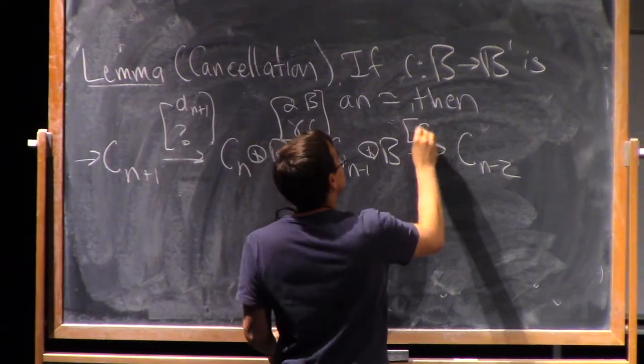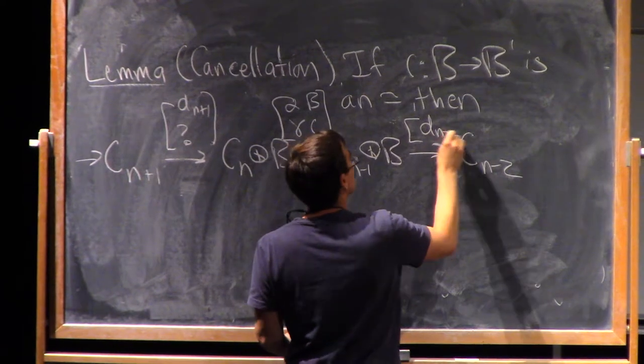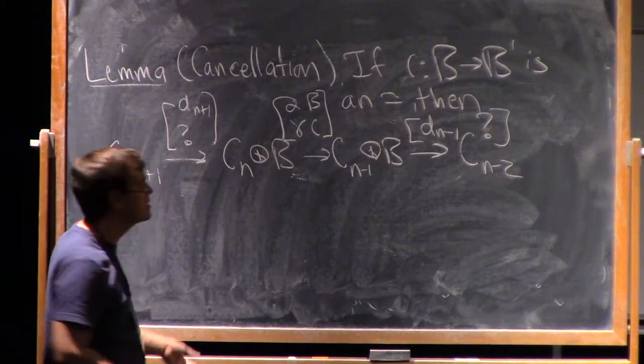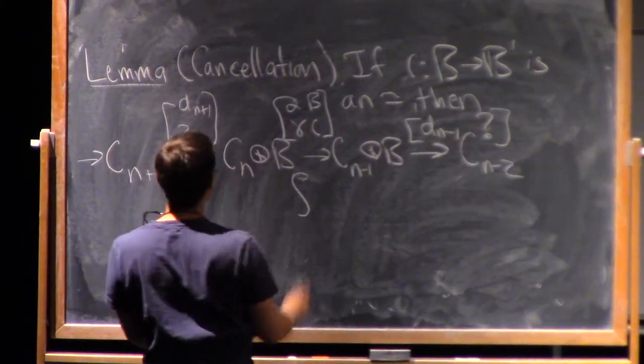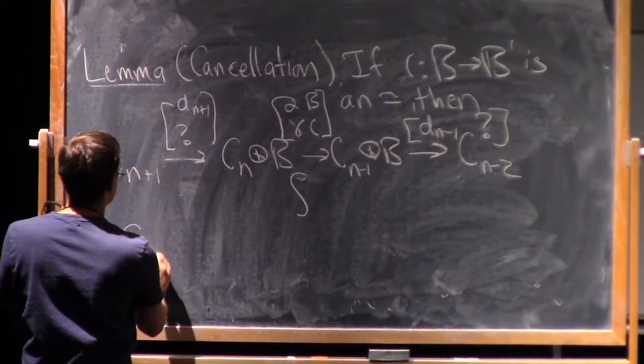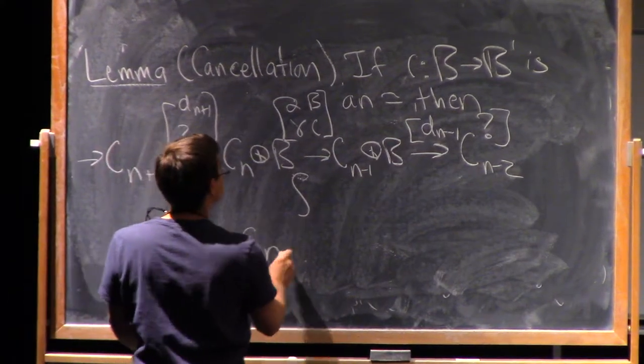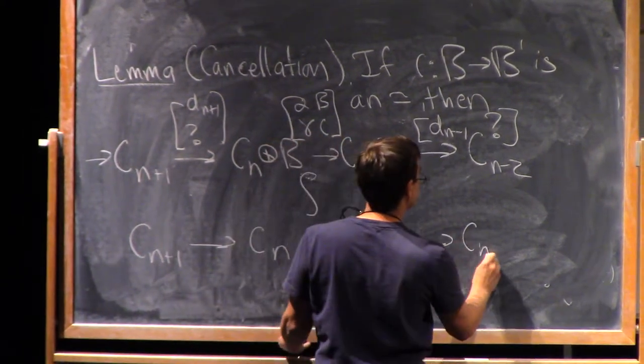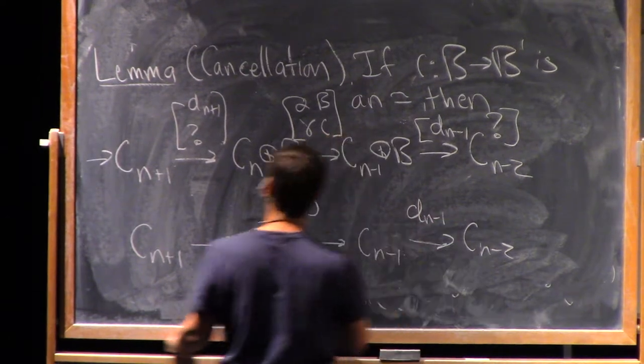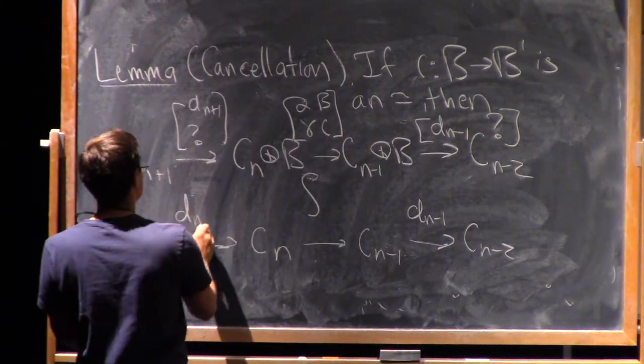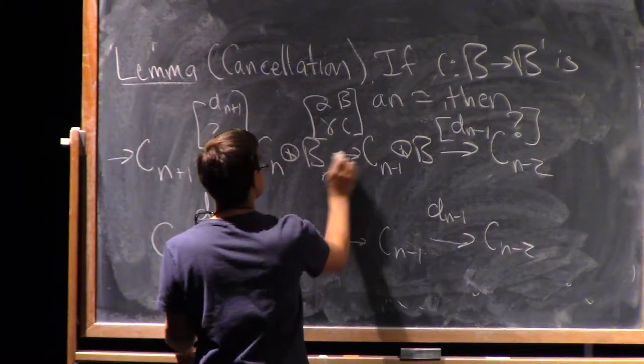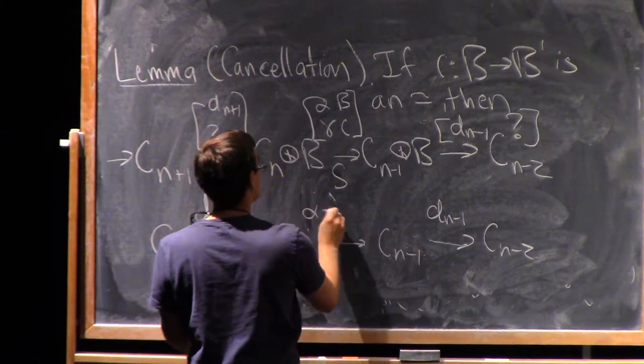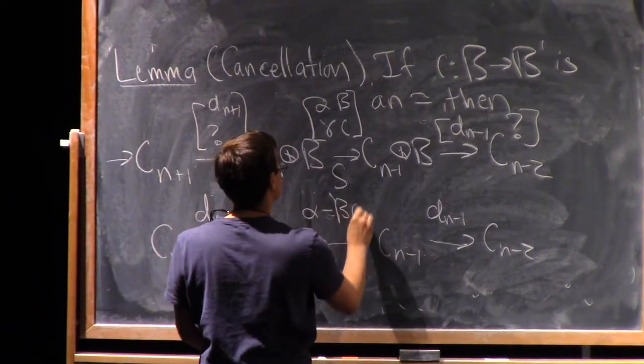And here I have dn minus one, and again, something that I don't care what it is. So here's a chain complex. This chain complex is homotopy equivalent to the chain complex that looks like cn plus one goes to cn, goes to cn minus one, to cn minus two. And here I have the obvious things, dn minus one, and dn plus one. And in the middle here, I should have written a smaller homotopy equivalent sign, I have alpha minus beta iota inverse gamma.